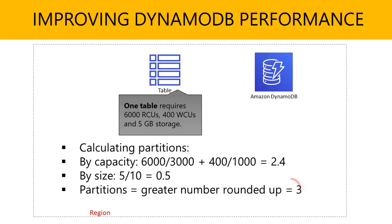The number of partitions will be the greater of those values rounded up. The greater value here is 2.4 — rounding up gives you 3. So you need at least three partitions allocated to that table in order to meet the throughput demands.